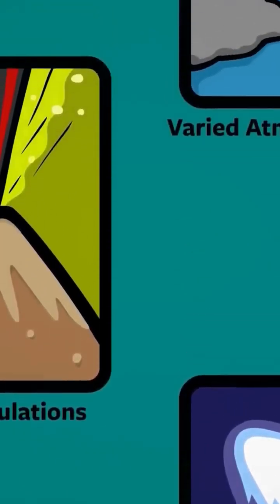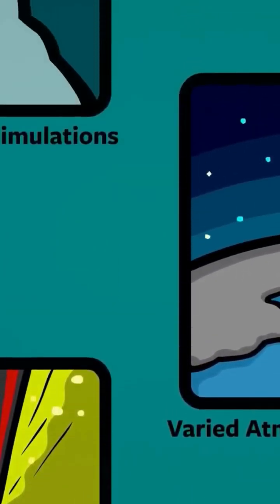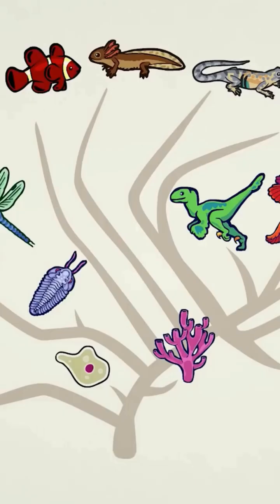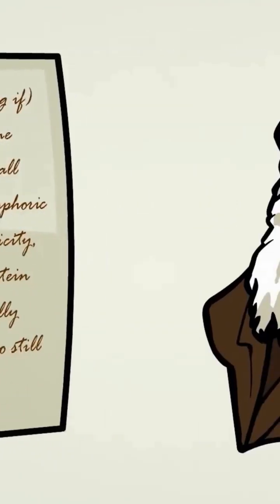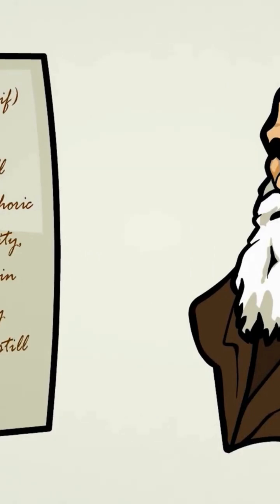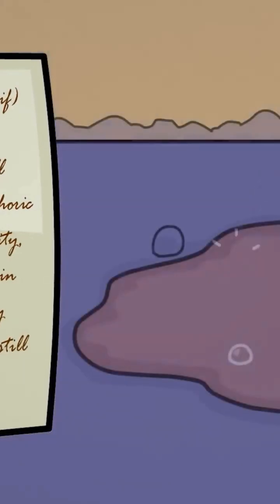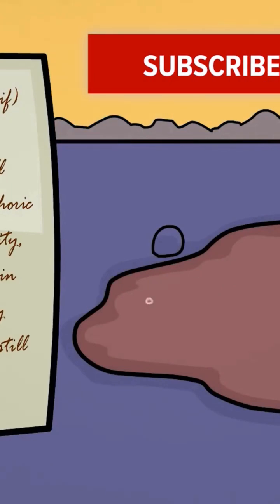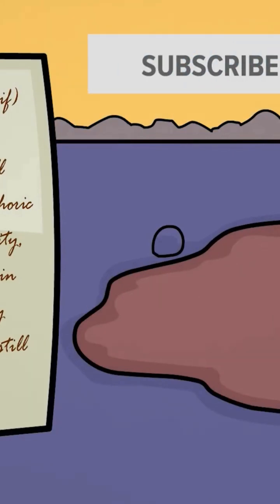To understand the origins of life, scientists have proposed various theories. One of the earliest theories dates back to the late 1800s, where scientists speculated that life might have begun in a warm little pond, a soup of chemicals energized by lightning, heat, and other energy sources, that could mix together in concentrated amounts to form organic molecules.